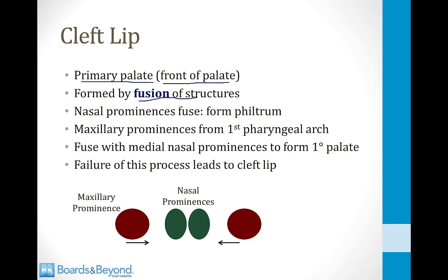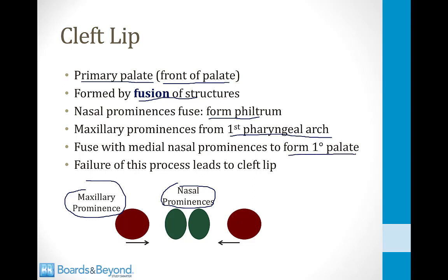In the embryo, there are two structures in the middle of what will eventually become the face and the palate called nasal prominences. They fuse to form the philtrum, which is the little bump right above your upper lip. On the outside of the embryo, in the future location of the face and the mouth, there are structures called the maxillary prominences. These derive from the first pharyngeal arch. These will fuse with the nasal prominences to form the primary palate, which is the front of the mouth.